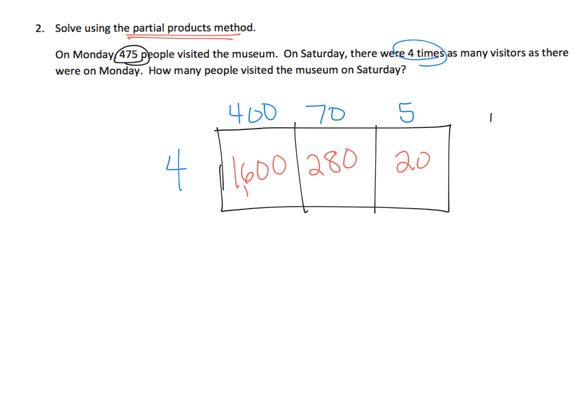Now we're going to add those partial products together, 1,600 plus 280 plus 20. Adding our ones place, we get 0. Adding our tens place, we get 10, so that's going to be 0. Carry the 1 into the next column. Adding our hundreds place, we get 9. And lastly, adding our thousands place, we get 1. So the answer is 1,900 people.